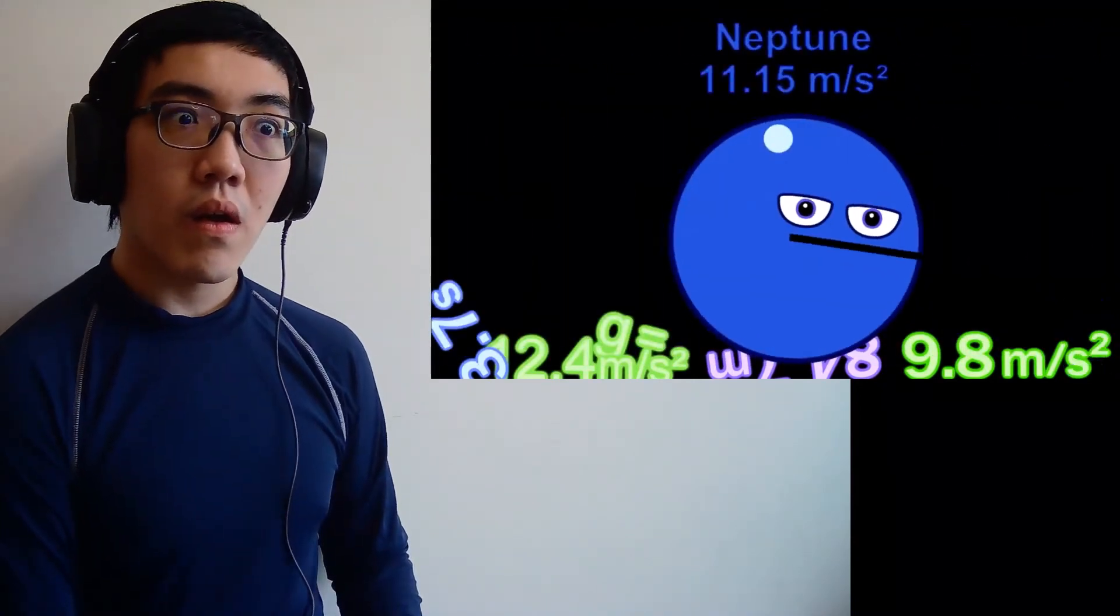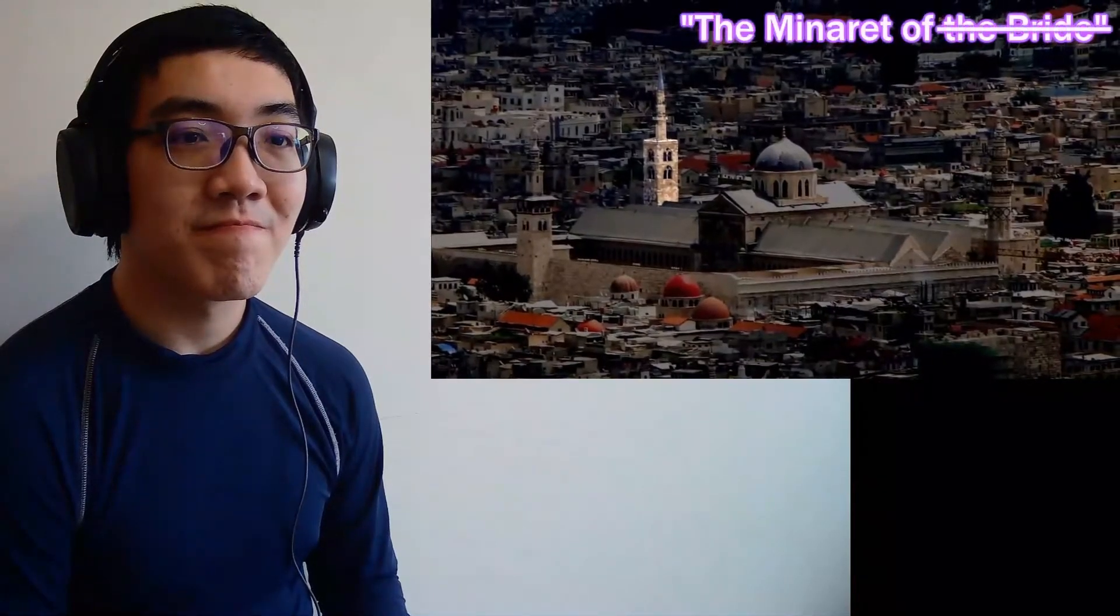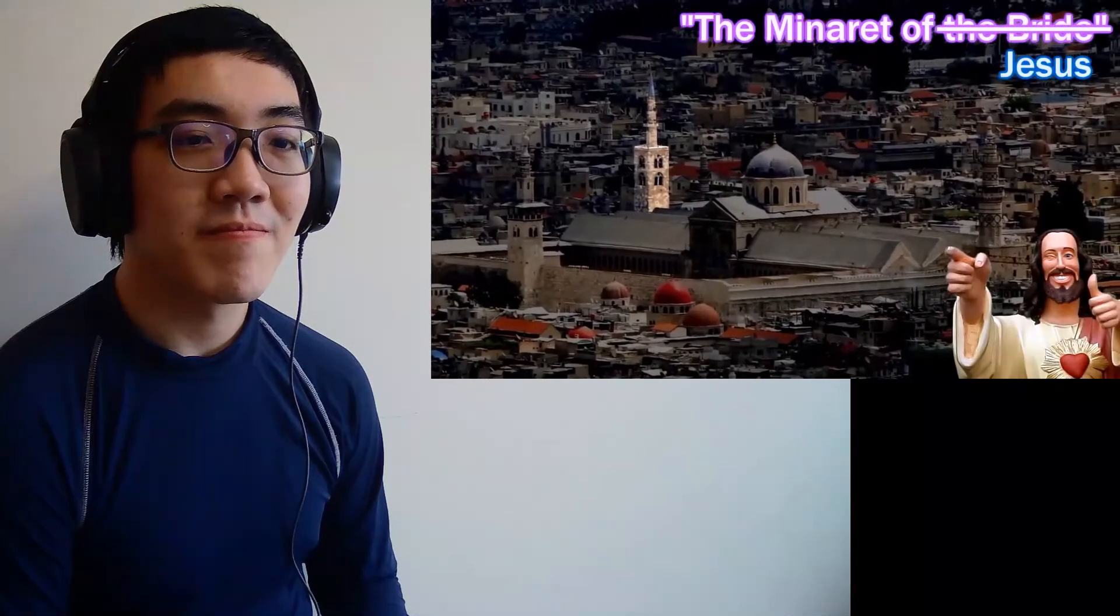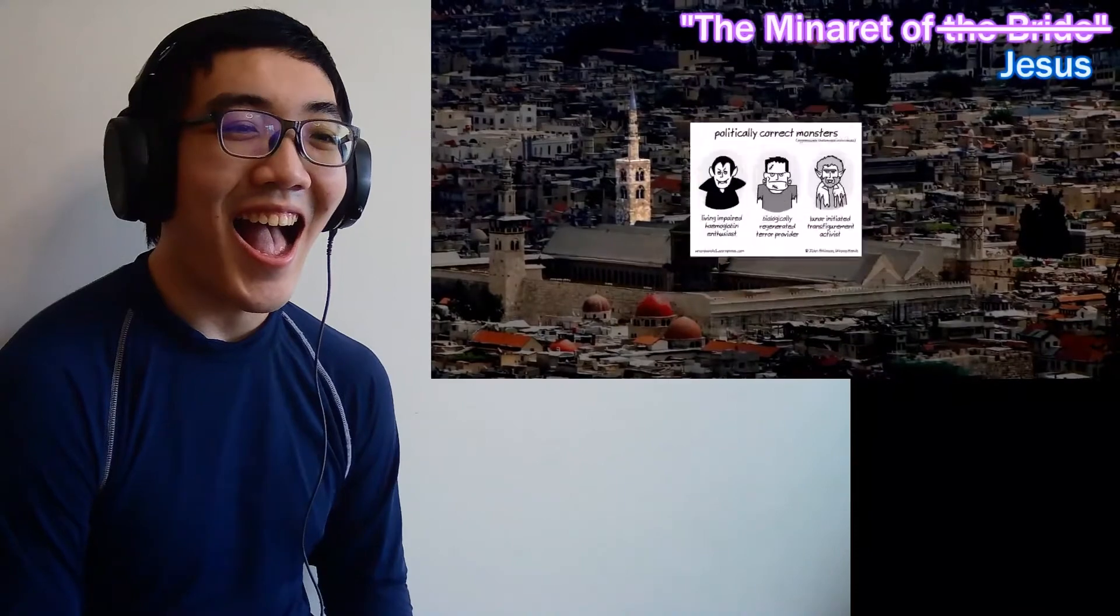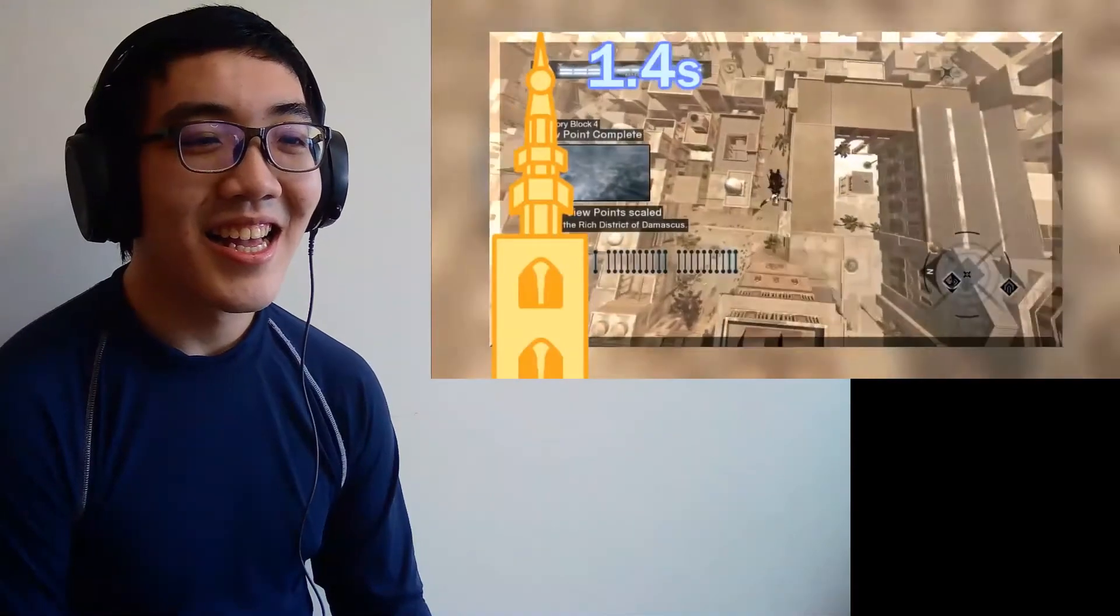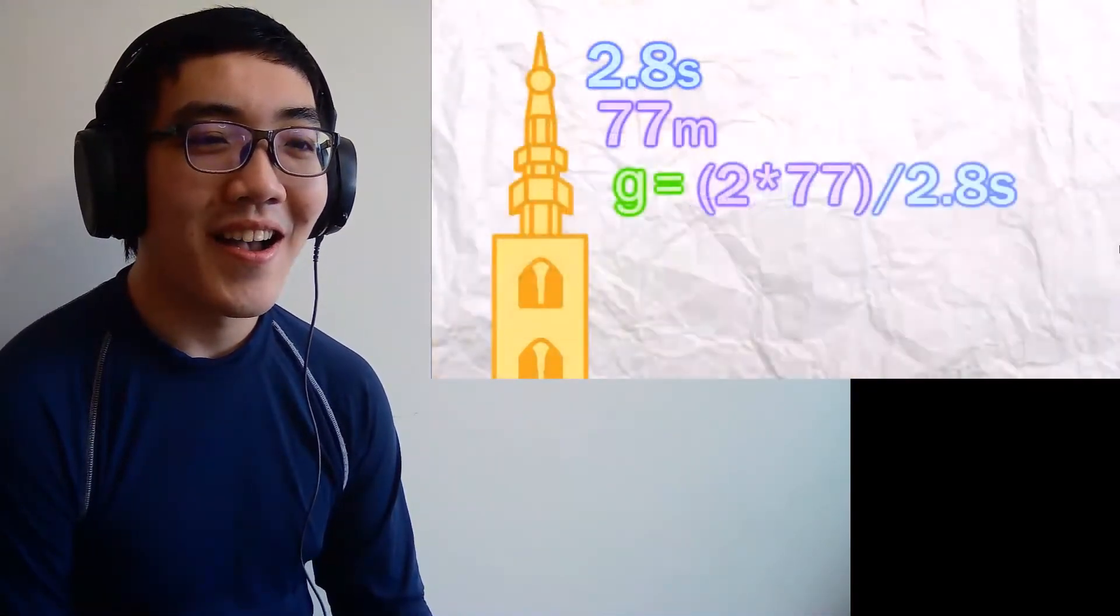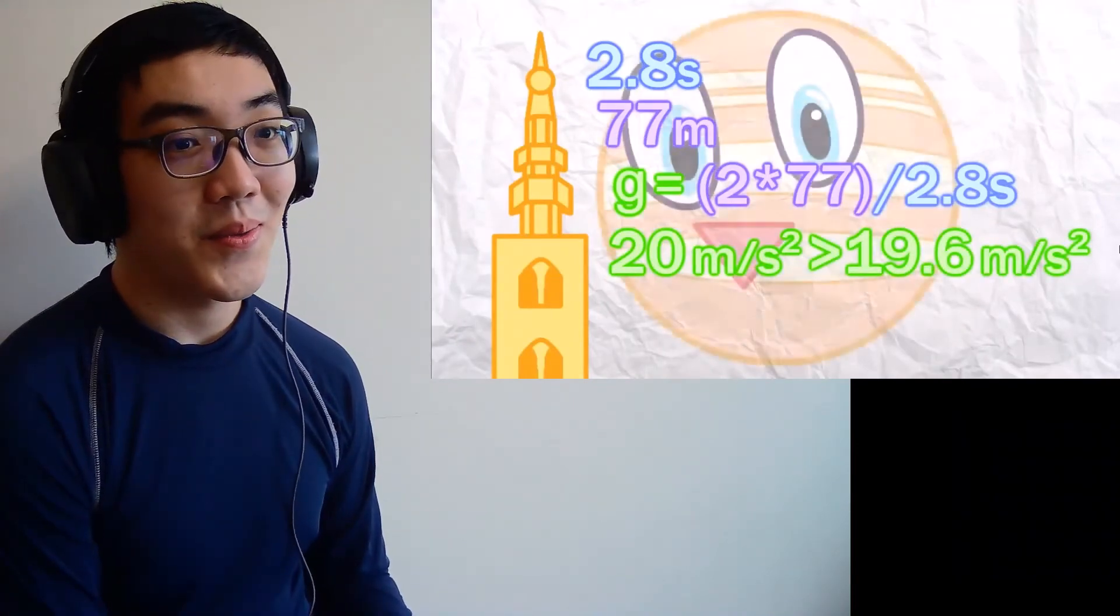In fact, 12.4 meters per second squared is greater than the gravity for every other planet in our solar system except for Jupiter. For Jupiter levels of gravity, we need to rewind to the first Assassin's Creed and the Umayyad Mosque in Damascus, one of the game's signature locations. Here we're jumping off its tallest minaret. The game mislabels it as the Minaret of the Bride when in actuality it's the Minaret of Jesus, probably in an attempt to avoid the religious name, but no need to worry about being PC here. Not that type of PC.